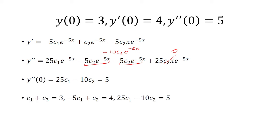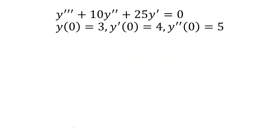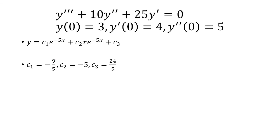Bringing those three equations together: c1 plus c3 equals 3; negative 5c1 plus c2 equals 4; 25c1 minus 10c2 equals 5. Solving the system, we get c1 equals negative 9 fifths, c2 equals negative 5, and c3 equals 24 over 5. Plugging these into our general solution gives y equals negative 9 fifths times e to negative 5x, minus 5x times e to negative 5x, plus 24 over 5. That is our solution.